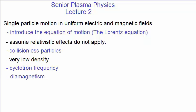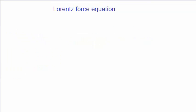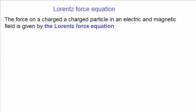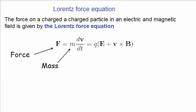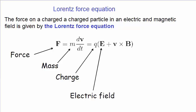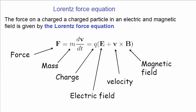The force on an individual charged particle is given by the Lorentz equation, and is this expression, where the symbols have the usual meaning: force, mass, the charge on the particle, the electric field vector, the velocity vector, and the applied magnetic field vector.